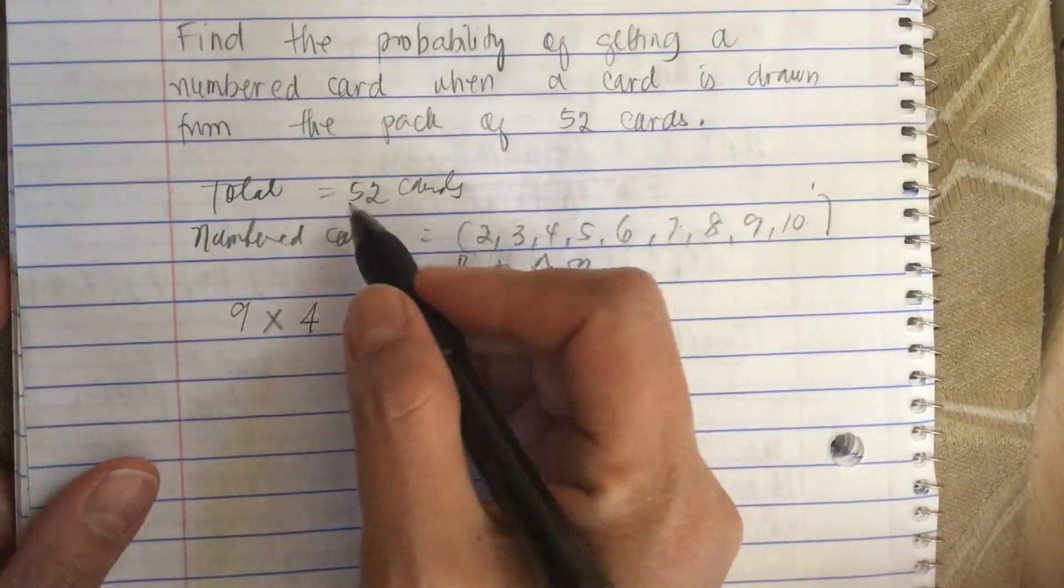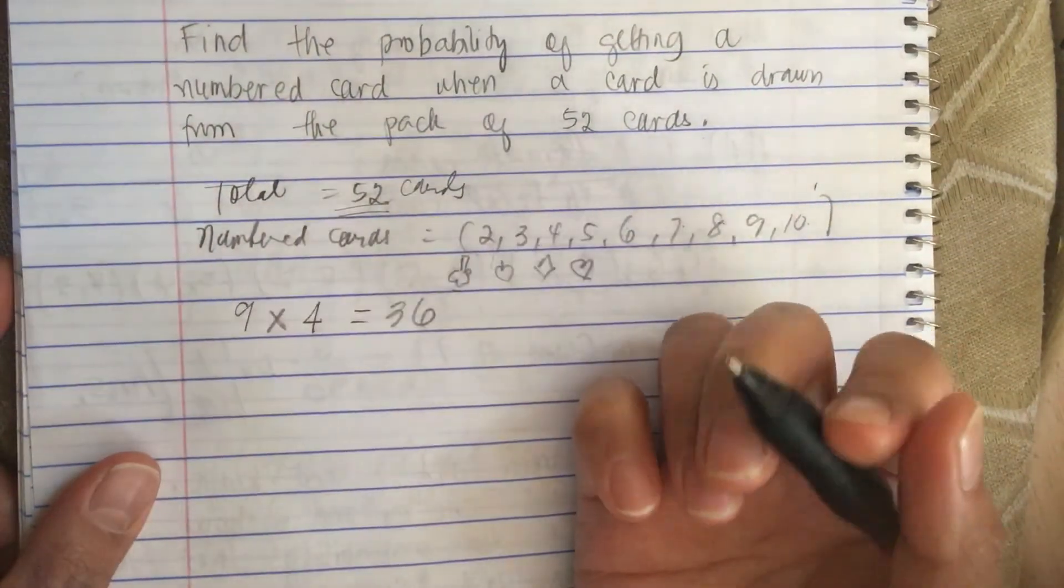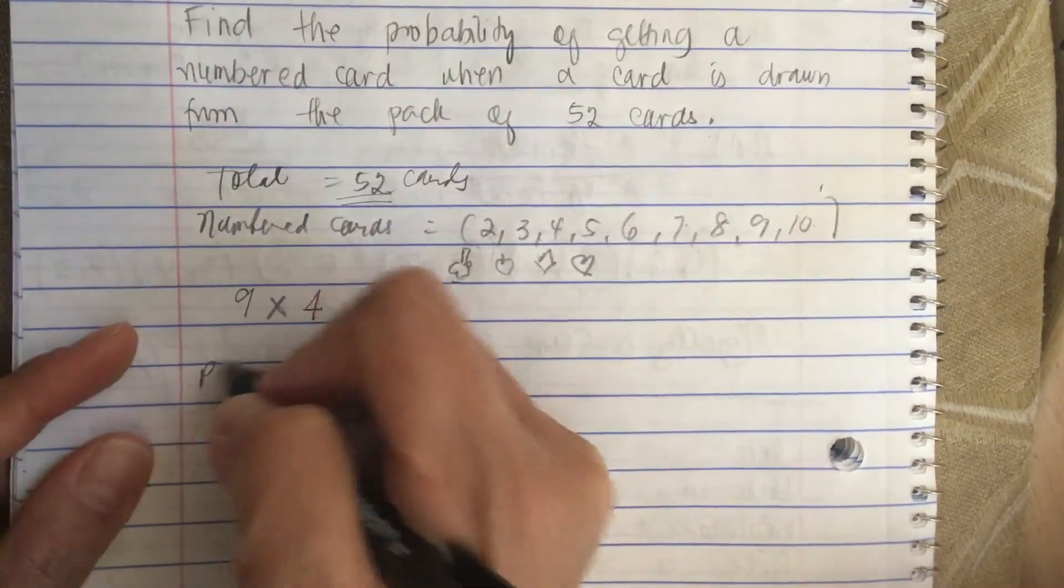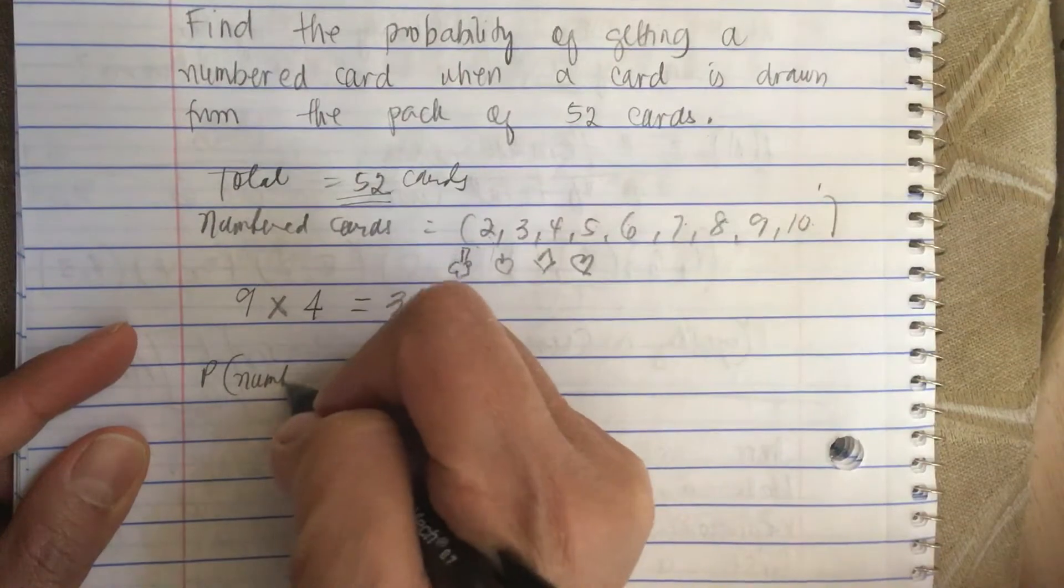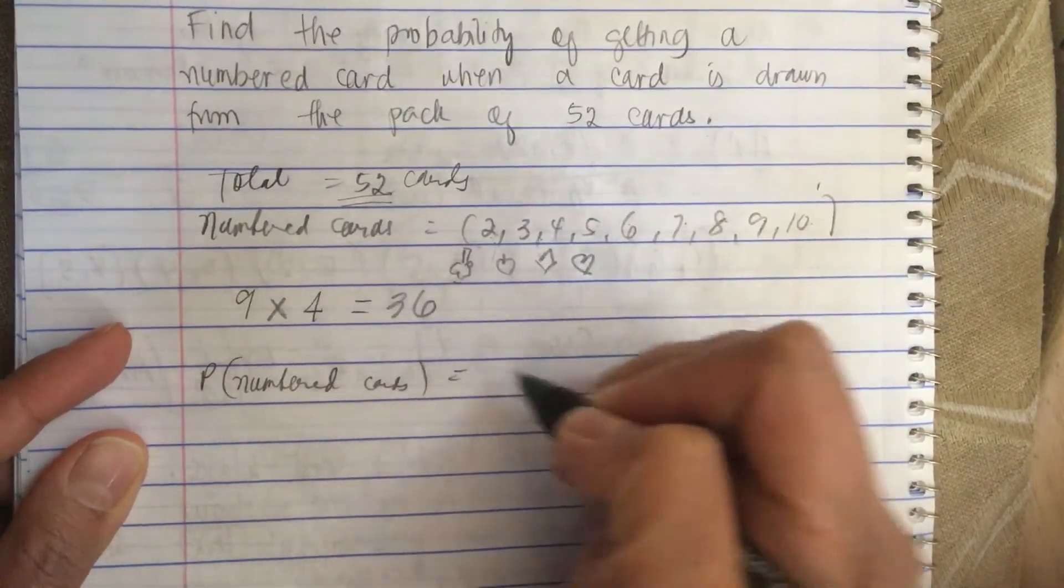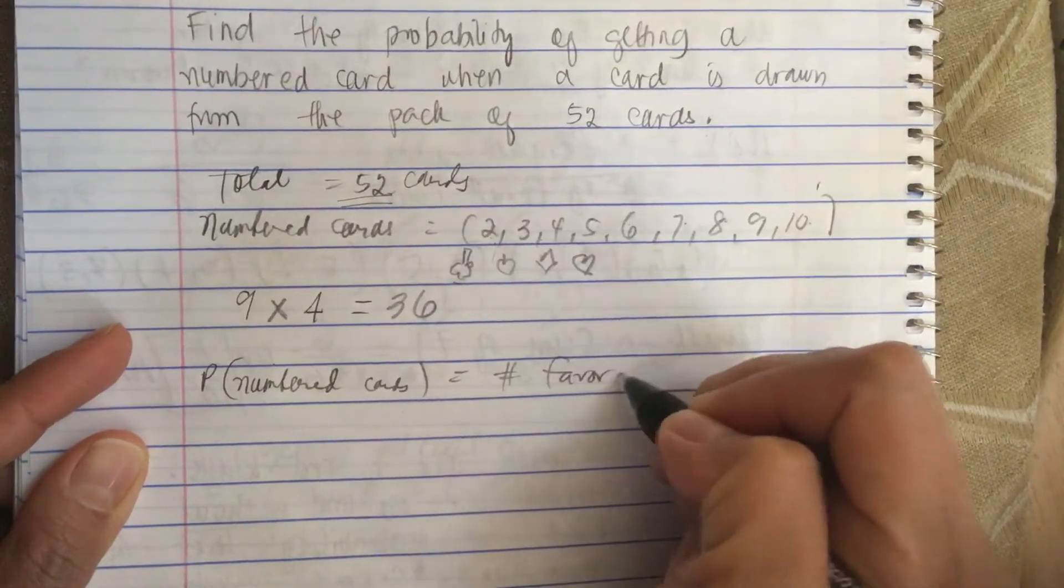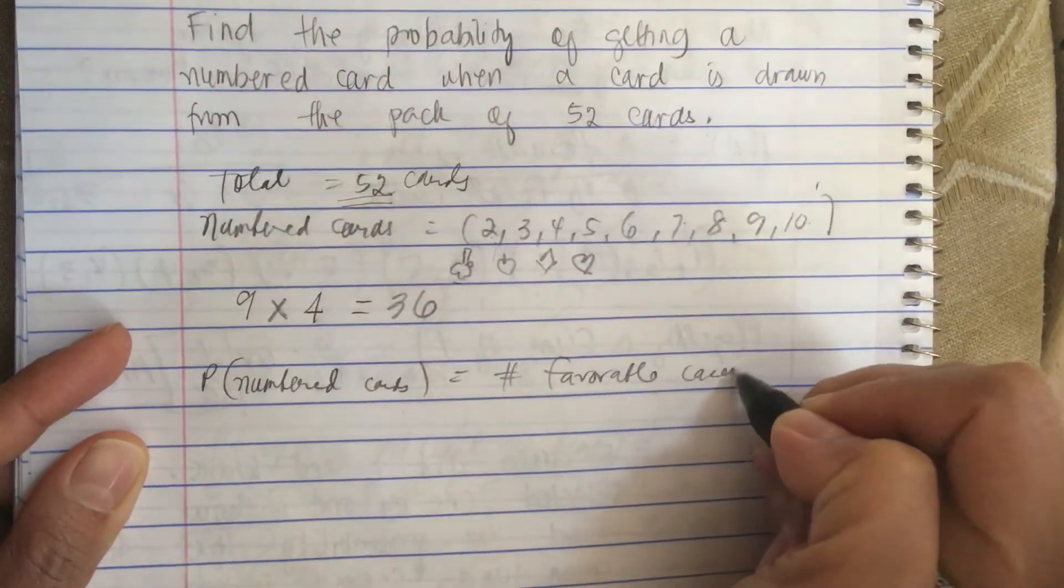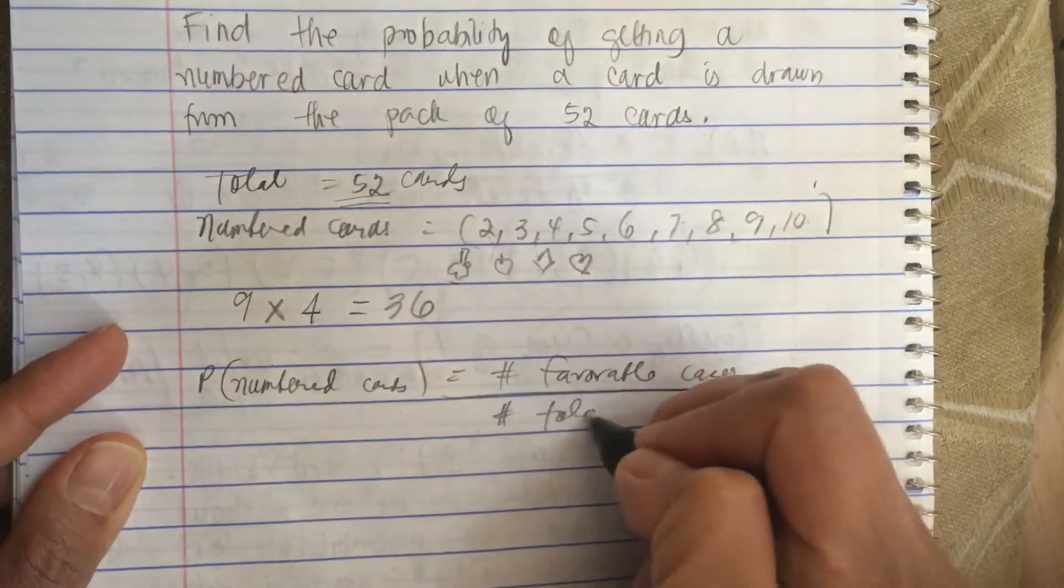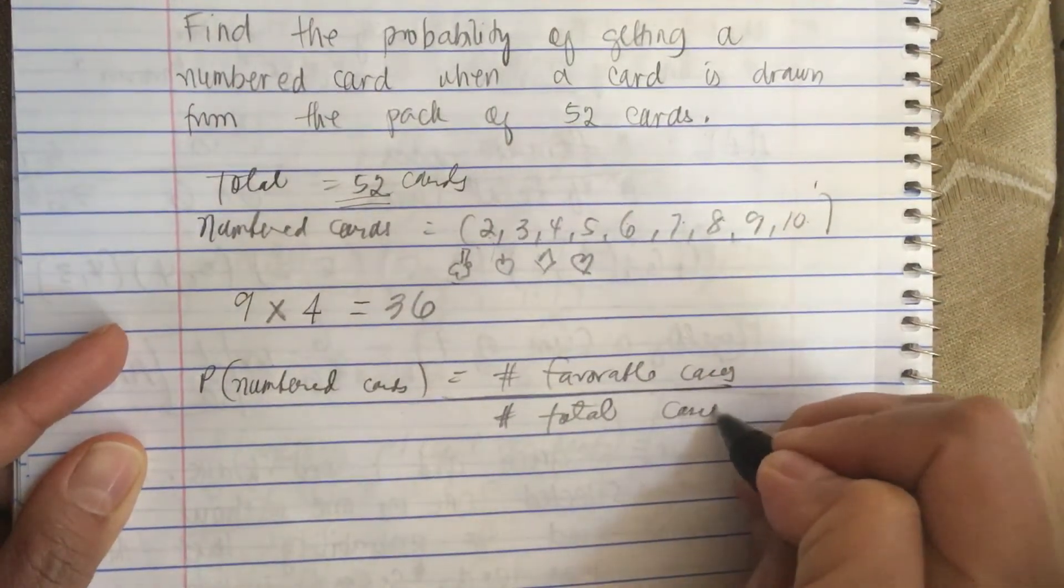So now there are 52 cards in total. So that means the probability of numbered cards is equal to the number of favorable cases all over the number of total cases.